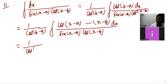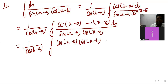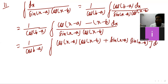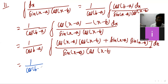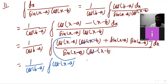Write the expanded form of cos[(x minus a) minus (x minus b)]. So it is 1 upon cos(b minus a), integration of cos(x minus a)·cos(x minus b) plus sin(x minus a)·sin(x minus b), all dx divided by sin(x minus a)·cos(x minus b). Now divide separately.